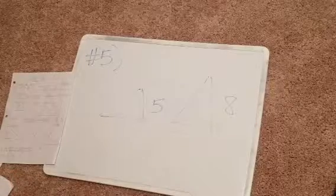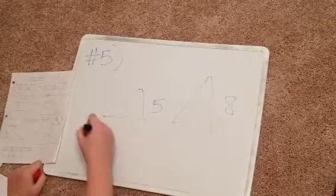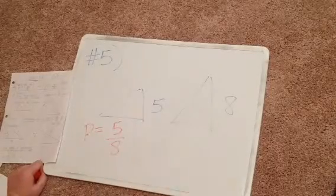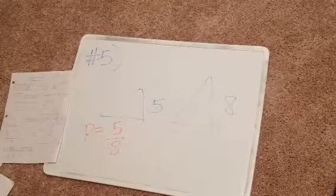So no real big work here we have to do, but we know for our perimeter, our ratio is going to be 5/8. That's all we have to do. We just take two corresponding sides, put them over each other.